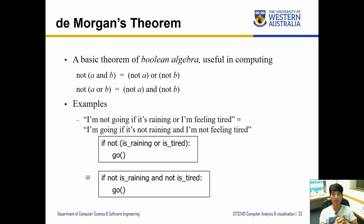De Morgan's theorem: logics can be rearranged, and depending on the situation one expression may be simpler and clearer. For example: not(A and B) is equivalent to not A or not B, and not(A or B) is equivalent to not A and not B. Here's an example: 'I'm not going if it's raining or I'm feeling tired' is equivalent to 'I'm going if it's not raining and I'm not feeling tired.' You can write either: if not(is_raining or is_tired), or if not is_raining and not is_tired.